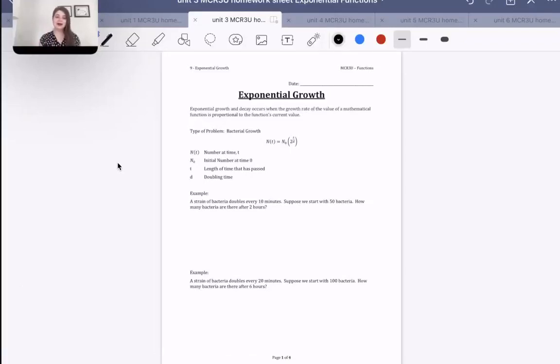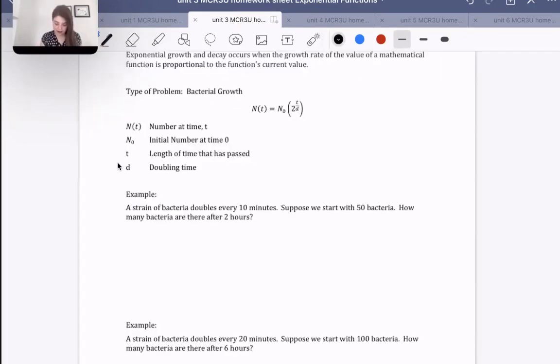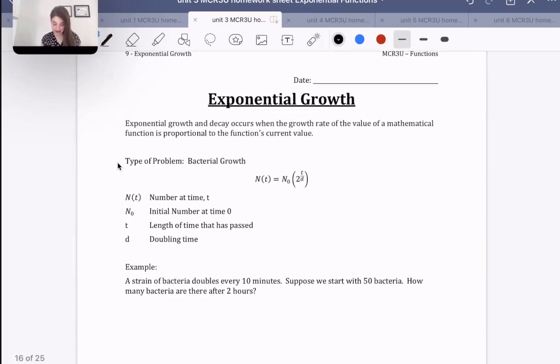Hello everyone, welcome. Today we are going to be talking about exponential growth. Exponential growth and decay occurs when the growth rate of the value of a mathematical function is proportional to the current function's value. In this case, we're talking specifically about exponential growth, when we take the current value and multiply it over and over by the same number, depending on what happens. Hence, exponential.